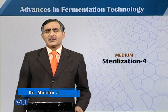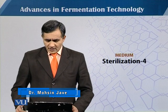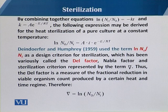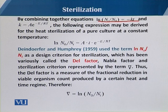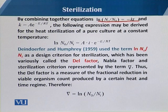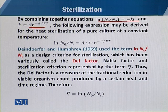In the continuation of the previous module about sterilization kinetics, we have the Arrhenius equation. If we combine that Arrhenius equation with the equation achieved by integration, we have: ln(Nt/N0) = -kt, where k equals the Arrhenius constant A times e to the power of (-E/RT). If we combine these two equations and substitute the value of k, we get the combined equation.